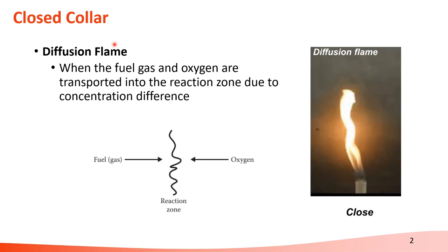This type of diffusion flame is just like the normal flame we can see in our life — a candle is also a diffusion flame. When the fuel gas and oxygen are transported into the reaction zone, we can see the boundary of the flame. That boundary is called the reaction zone. The fuel gas is located inside the boundary, and the oxygen is in the ambient environment. When they reach the reaction zone, which is the flame boundary, it will start to create some flame at the boundary.